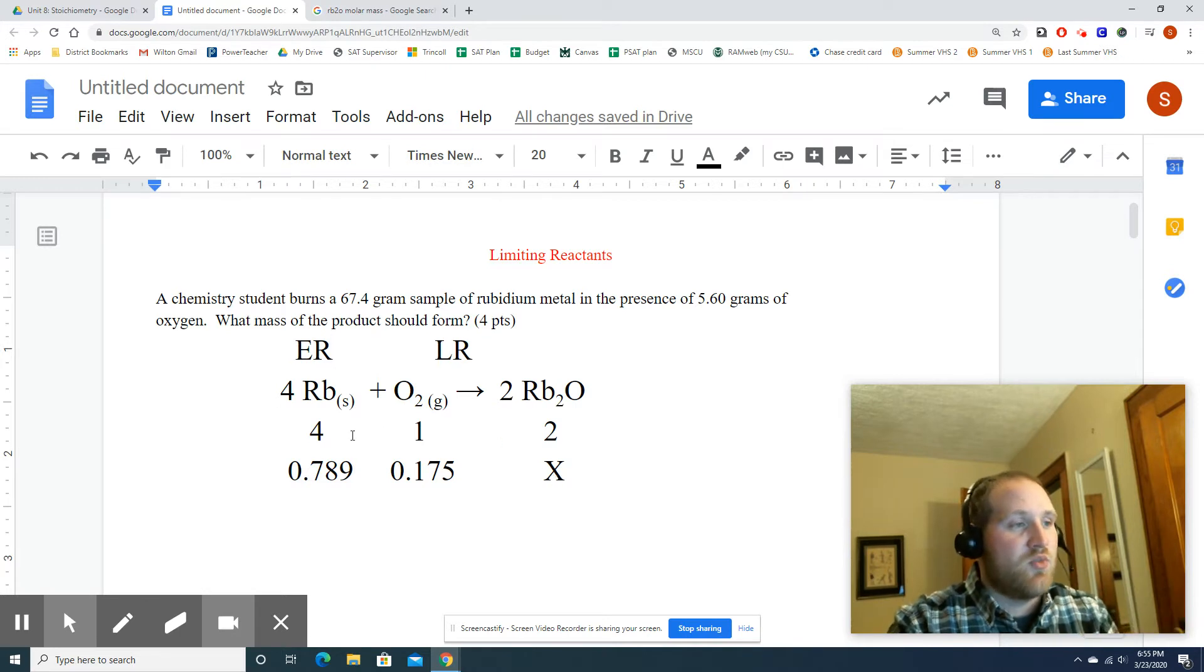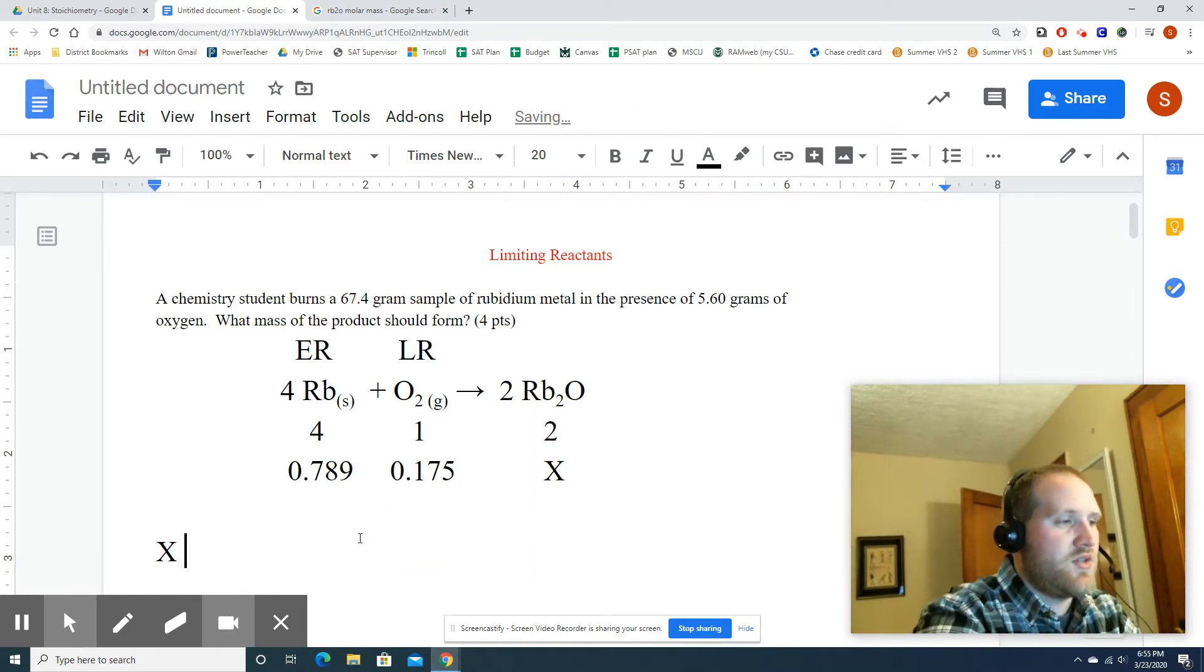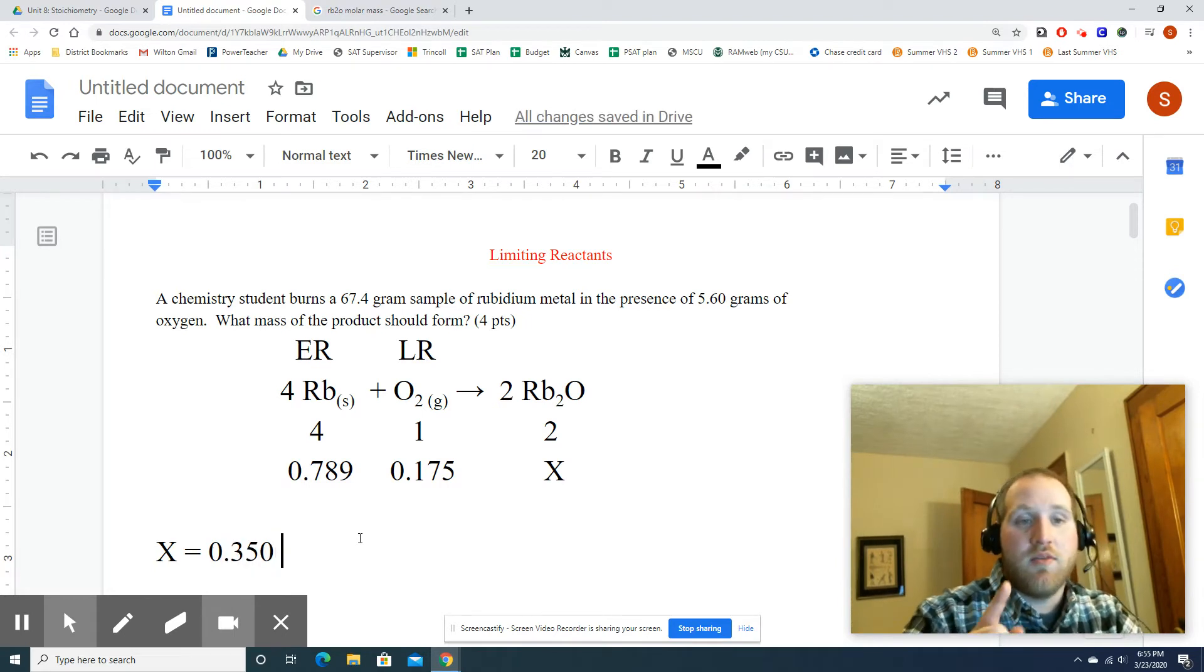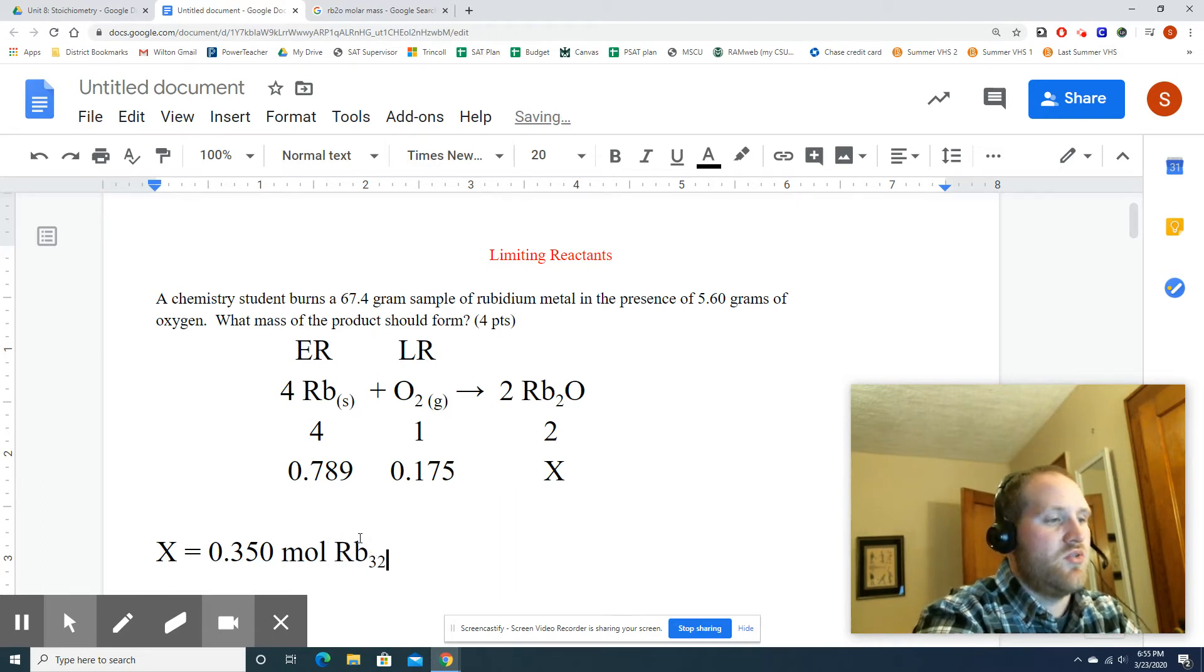Now, we have to solve for X. Which of these do we use? The limiting reactant only. So it's a 1 to 2 mole ratio. So you're going to double this, which is actually pretty easy. 0.175 times 2. That's 0.350. So X equals 0.350. And what's the unit? Moles, not grams. And it's moles of Rb2O.